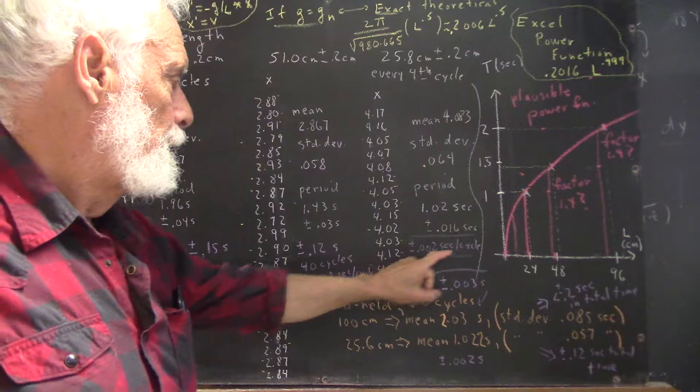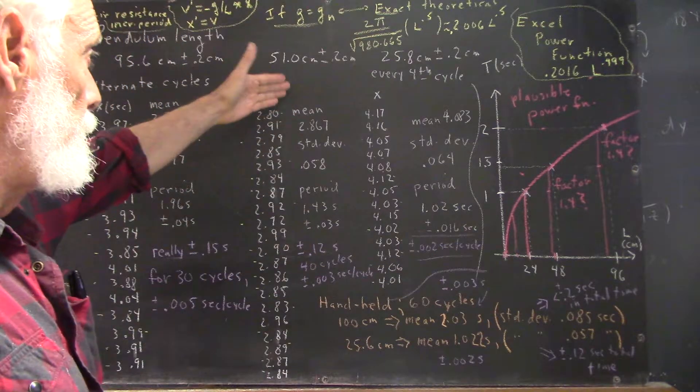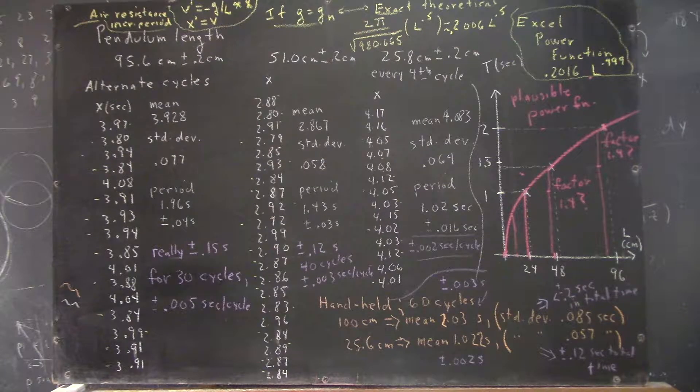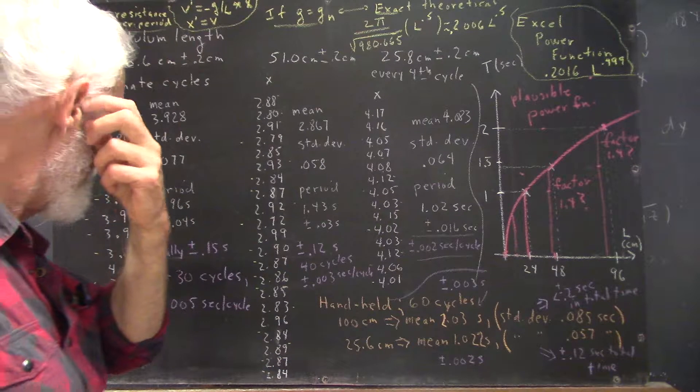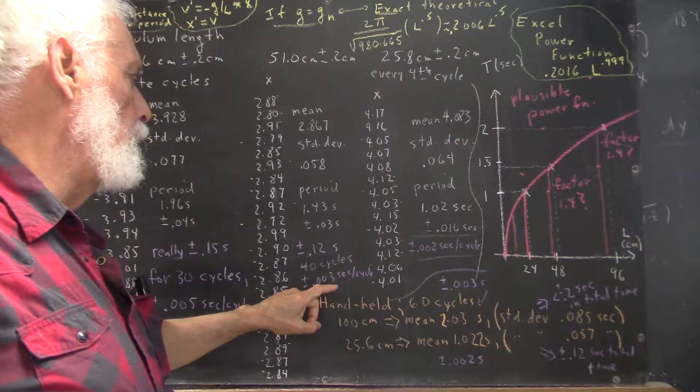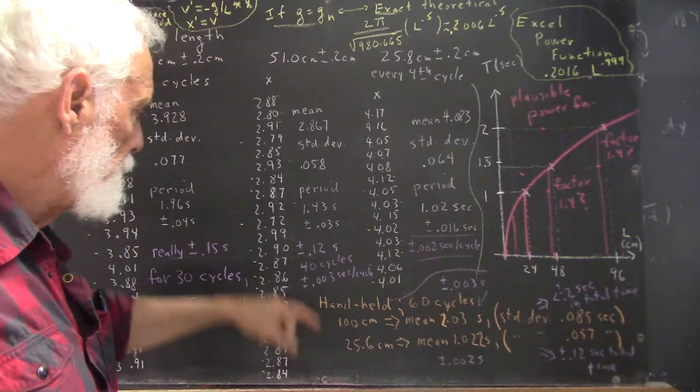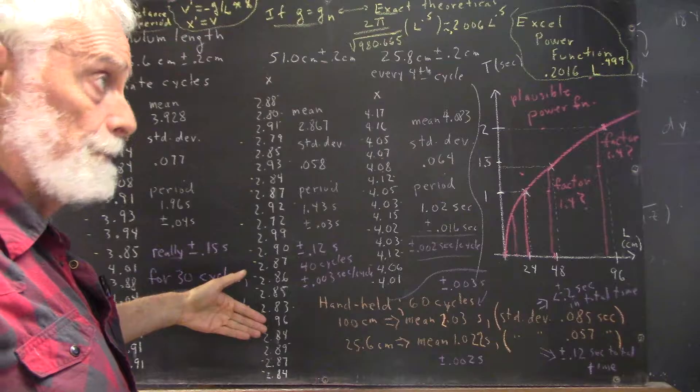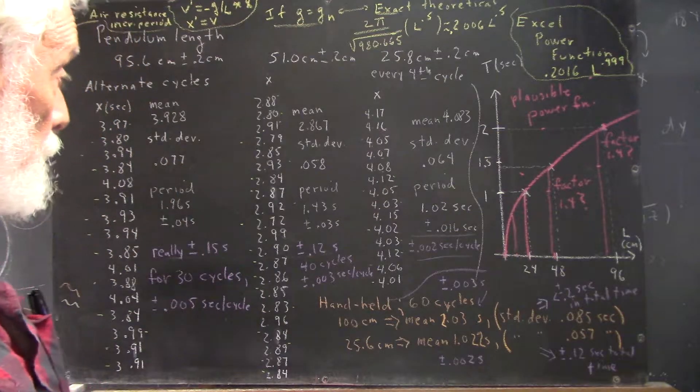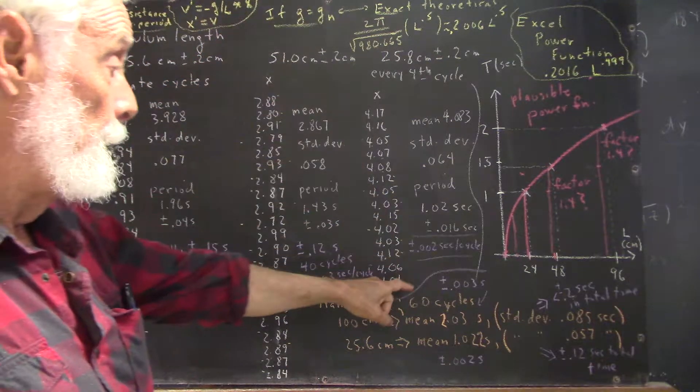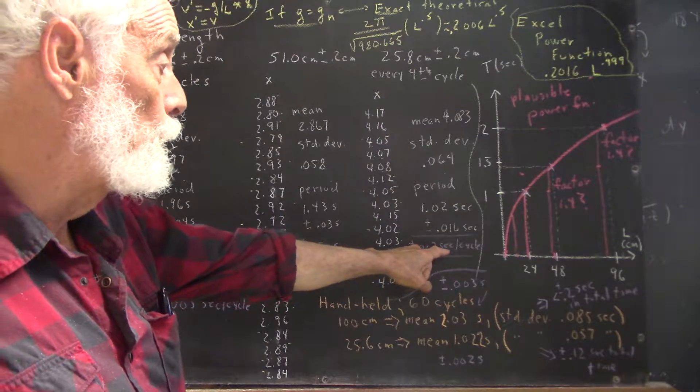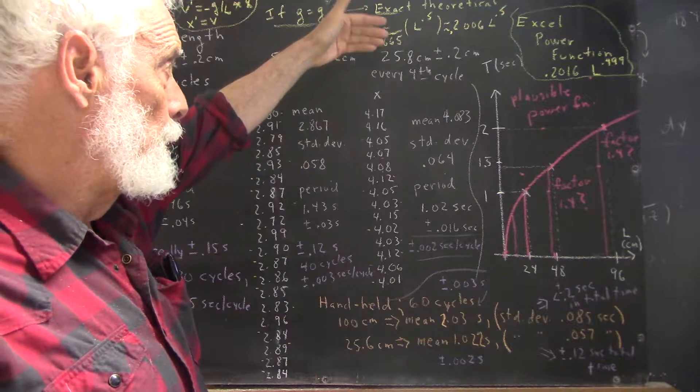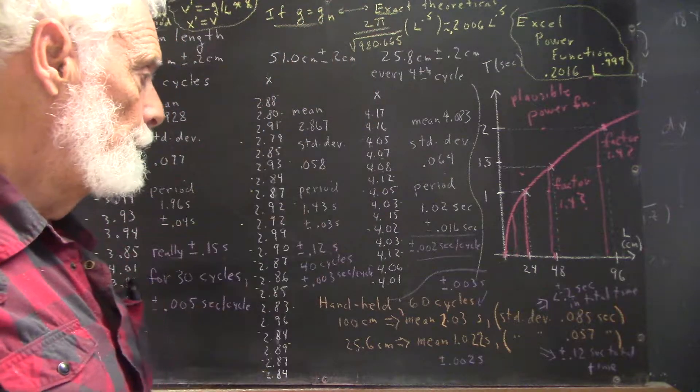And we can do similar calculations for the data for the other two pendulum lengths, obtaining estimates of plus or minus 0.003 seconds per cycle uncertainty in the average duration of a cycle for the 51-centimeter pendulum and plus or minus 0.002 seconds per cycle uncertainty for the 25.8-centimeter pendulum.